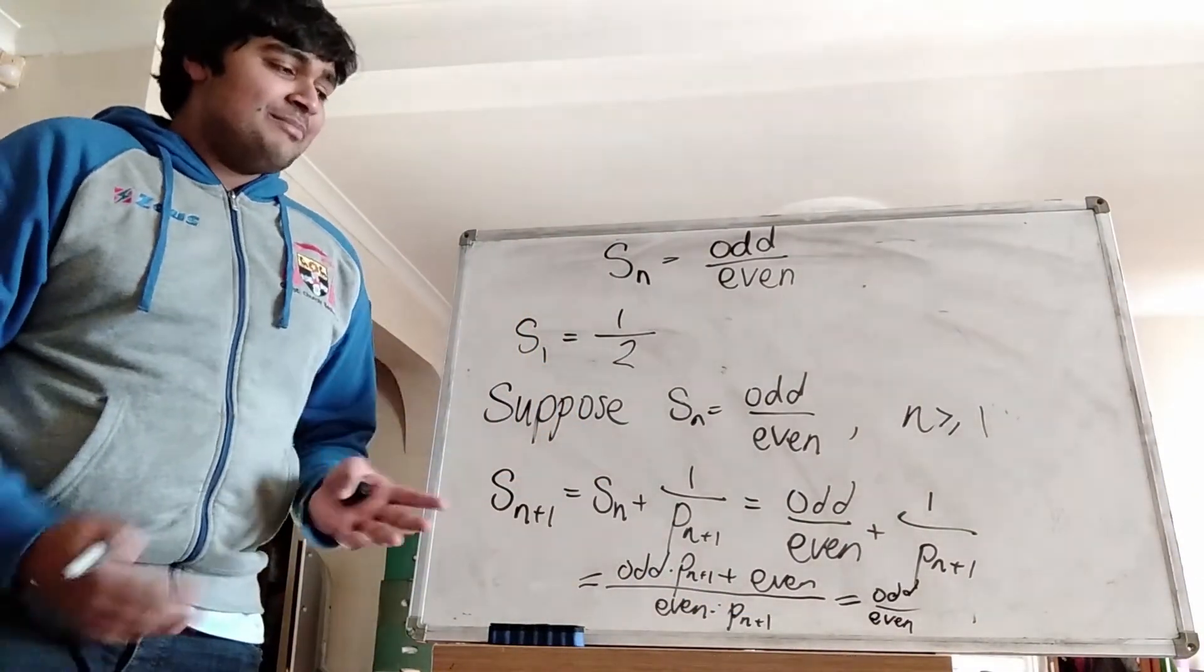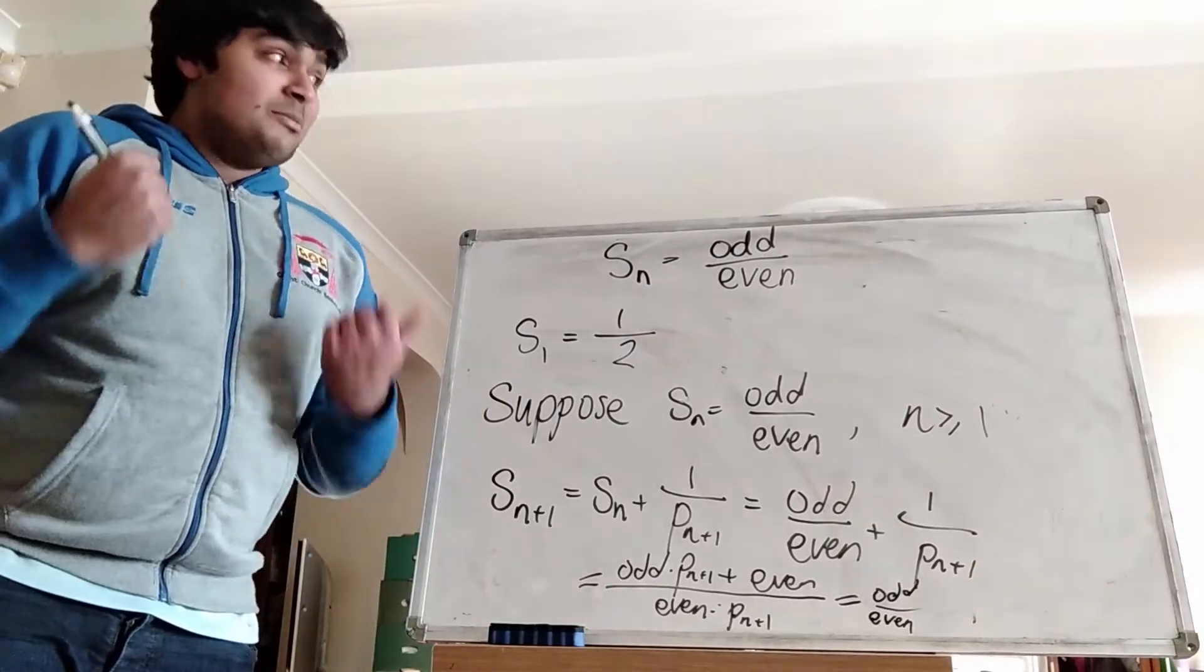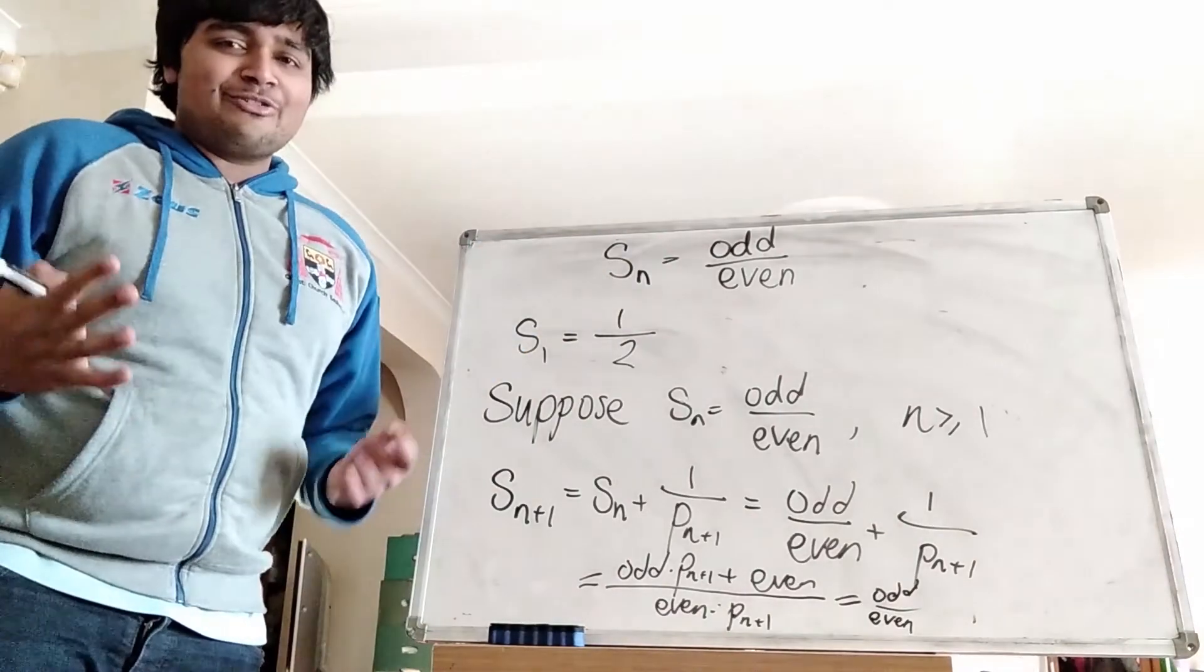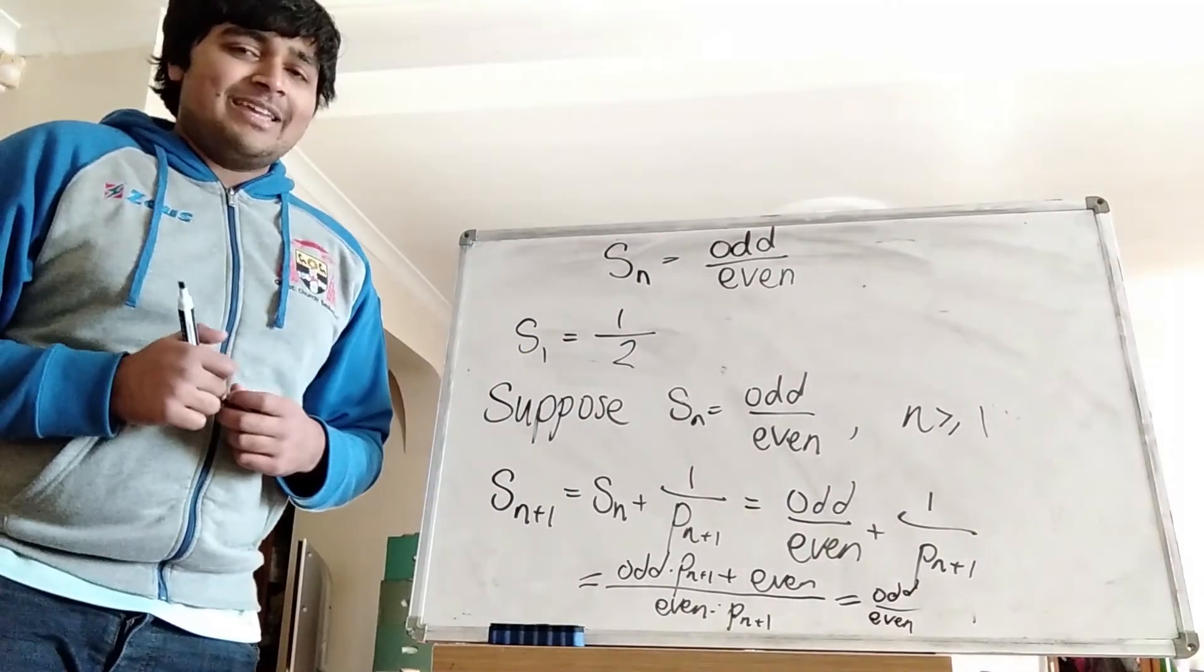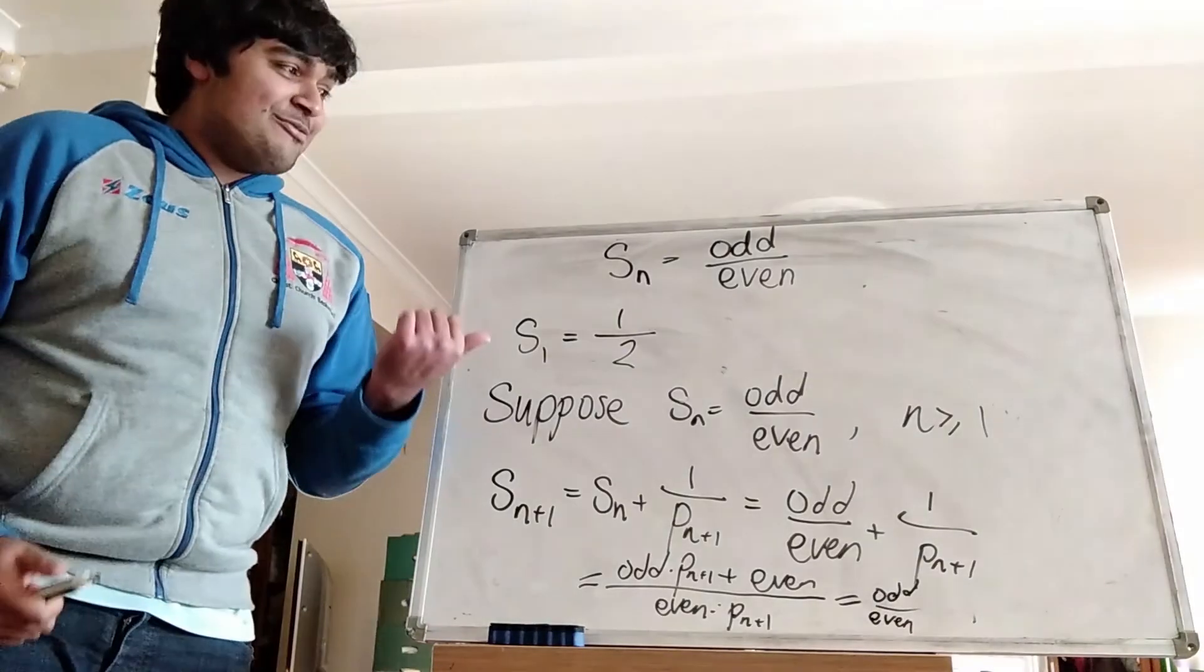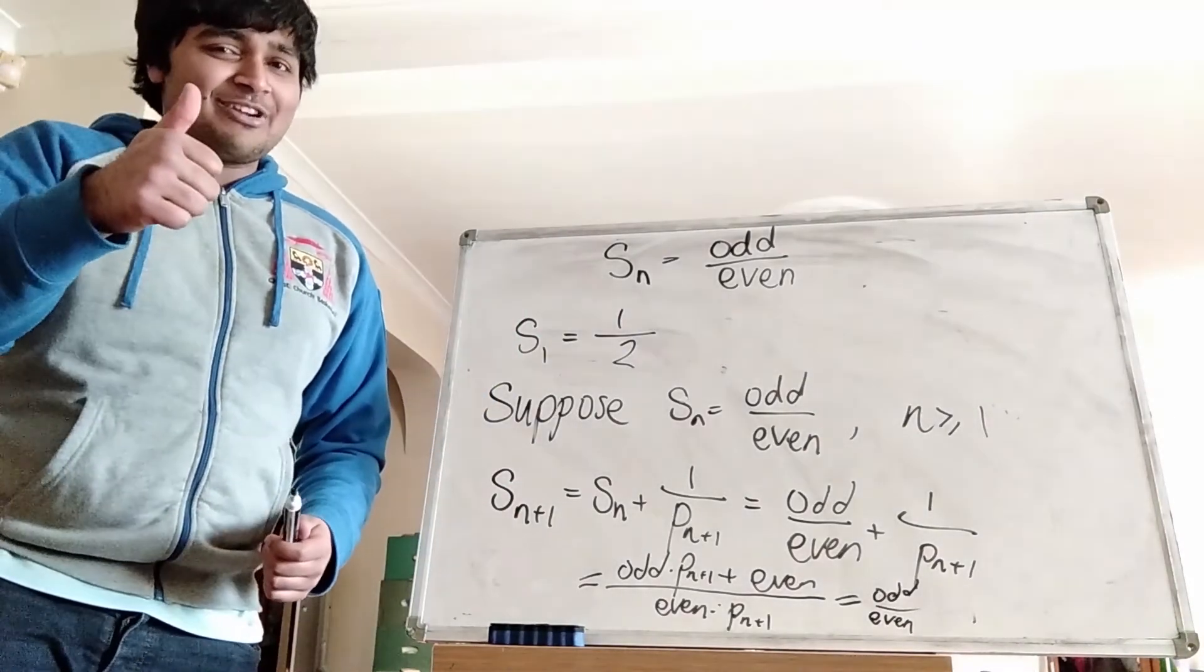So Sn plus 1 isn't an integer, and thus we've proved our claim by induction that Sn is always of the form odd over even. So in particular, it can never be an integer. Anyway, that's a quick video for you. I hope you have enjoyed it. I'll catch you in the next one. Have a great day.